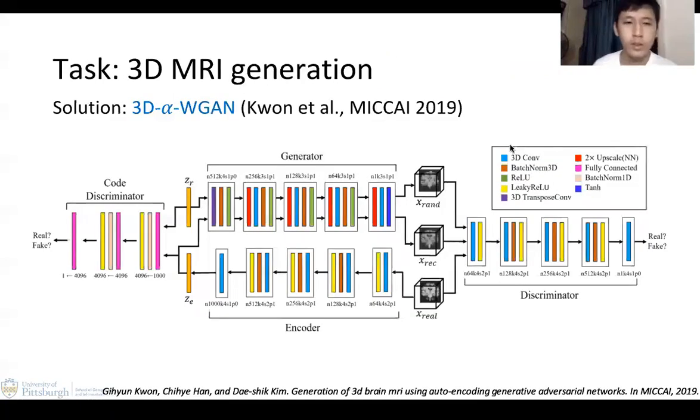The next solution is called 3D alpha-WGAN. It adopts the structure of alpha GAN and also uses the Wasserstein gradient penalty. This model also tries to learn nice conversions in the latent space. It uses the code discriminator, which is a neural network consisting mostly of linear layers, and this model will distinguish the encoder's output from the real Gaussian.